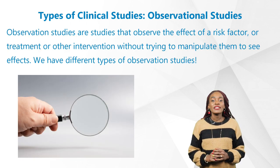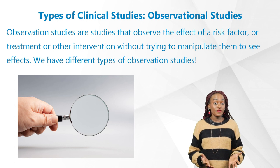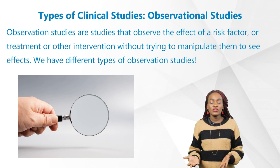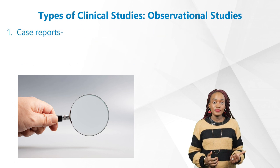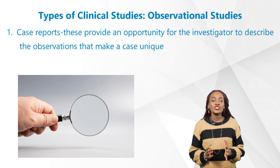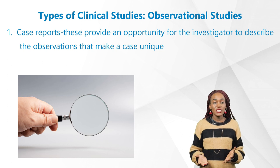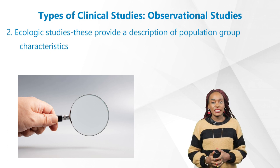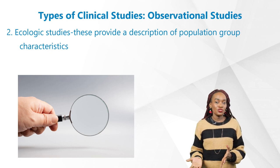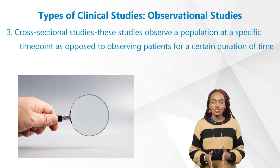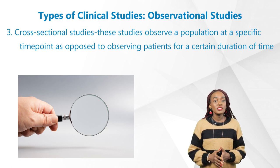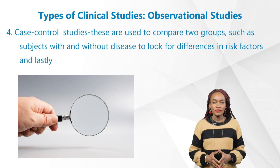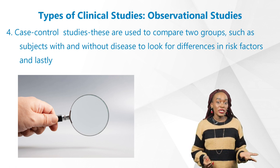Let's start with observational studies. These are studies that observe the effects of a risk factor, treatment, or other intervention without trying to manipulate them. We have different types: one, case reports, which provide an opportunity for the investigator to describe observations that make a case unique; two, ecological studies, which provide a description of population group characteristics; three, cross-sectional studies, which observe a population at a specific time point as opposed to observing patients over a duration of time; and four, case-control studies, which are used to compare two groups, such as subjects with and without disease, to look for differences in risk factors.